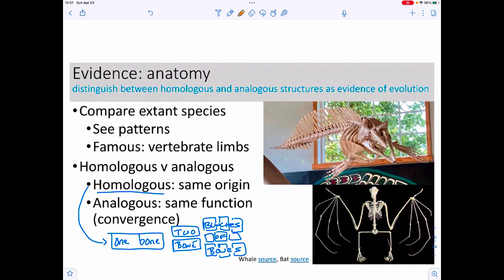We could also look at anatomy of things that currently exist, so we're comparing extant species, and again we could see some patterns. The most famous of these patterns are the vertebrate limb patterns. Those patterns go one bone, two bones, then you get a whole bunch of bones. This turns out to work out for your arms—one bone, two bones, a whole bunch of bones—and for your legs.